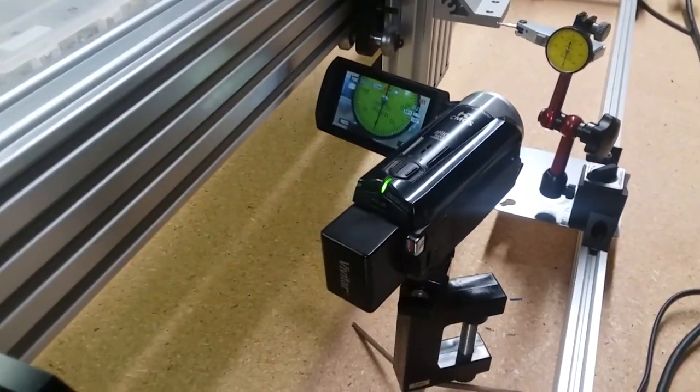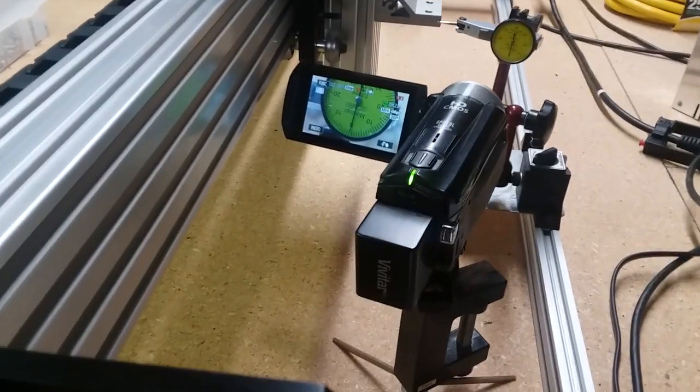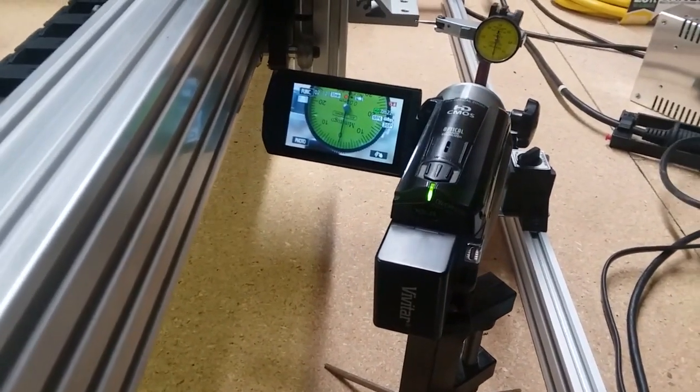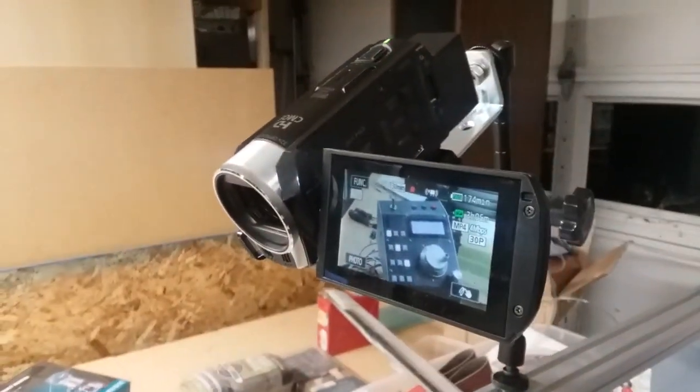I've got two cameras set up. I have one that's here for a zoomed in view of the dial indicator and I tried to eliminate as much parallax as I can. Then over here on this side I have another camera to show you the control panel.